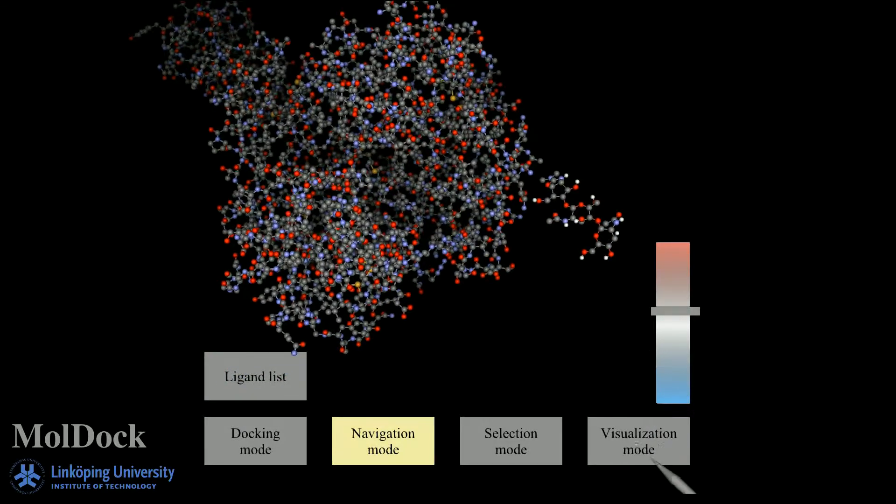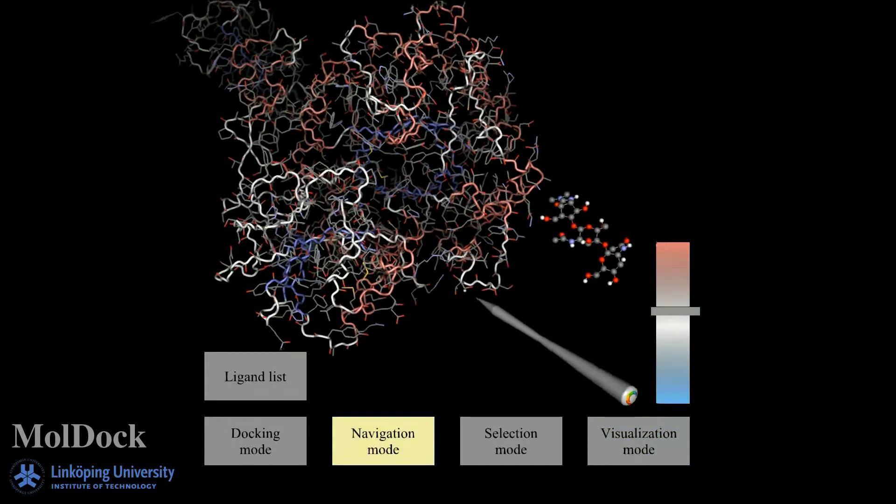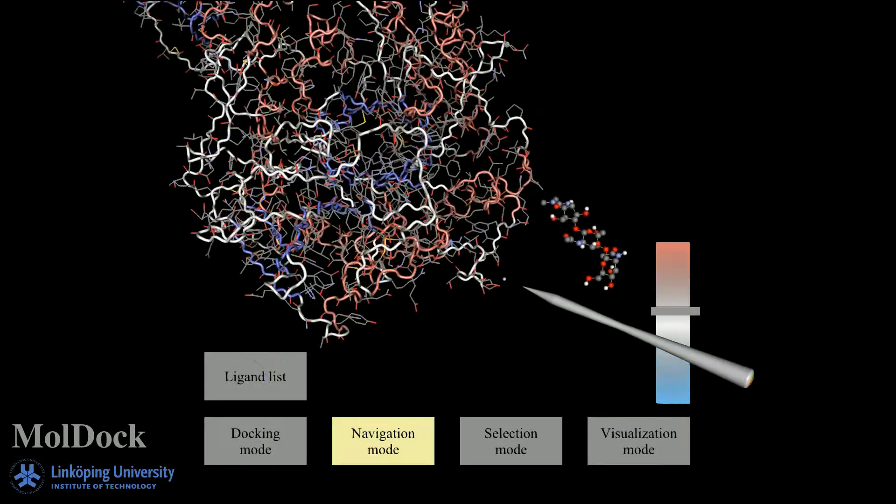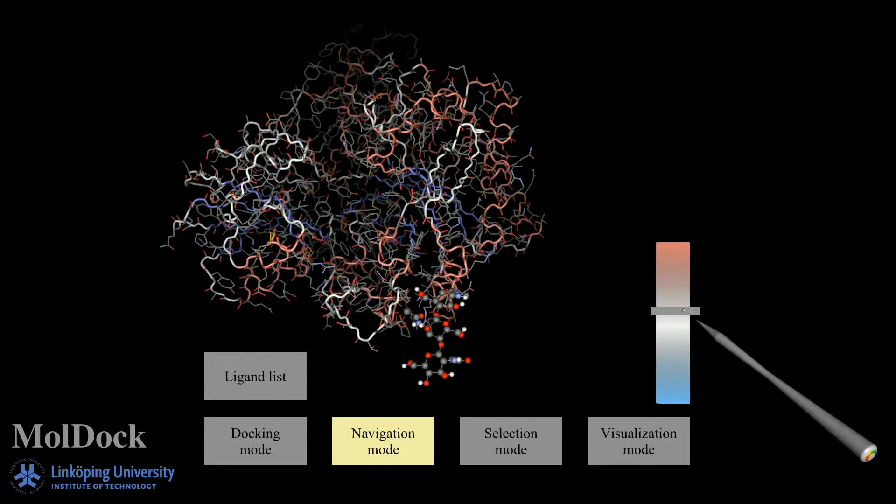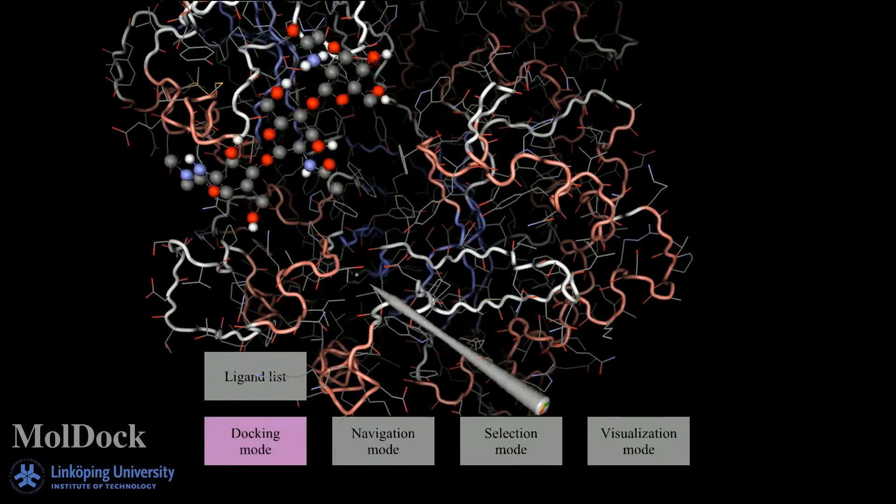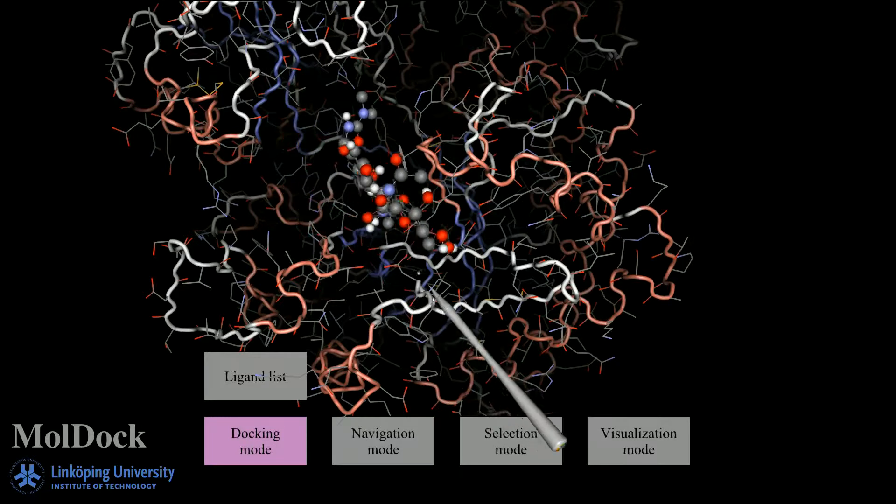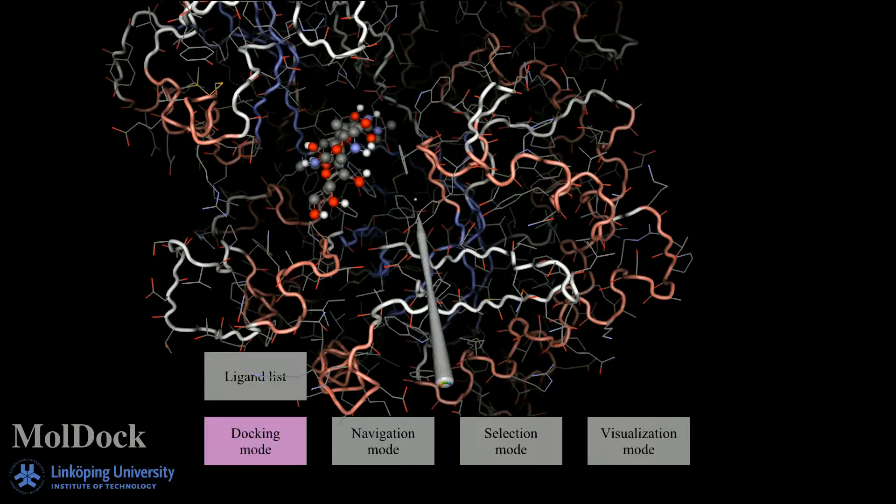The ligand binds to the active site of the chitinase enzyme, making it temporarily inaccessible to the substrate molecule. This inhibits the natural catalytic reaction of the chitinase protein. Understanding more about the binding of inhibitors to this protein may contribute to the development of more efficient drugs against this bacterium and other similar types of pathogens.